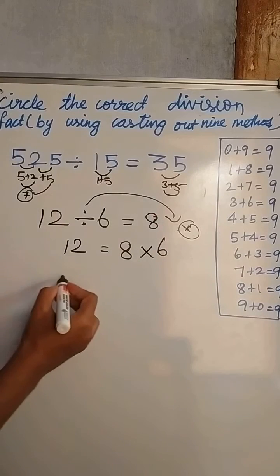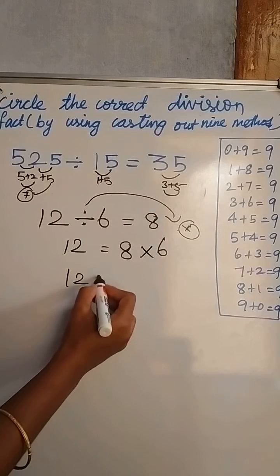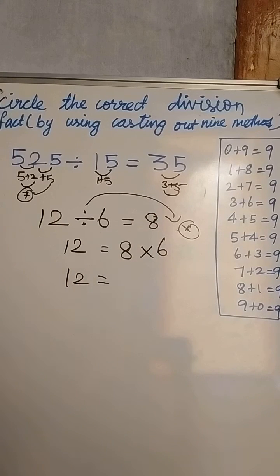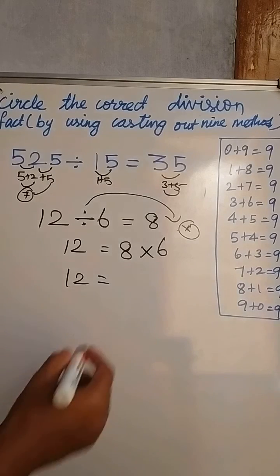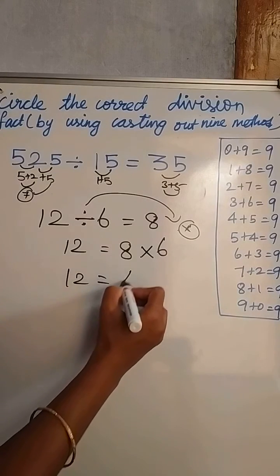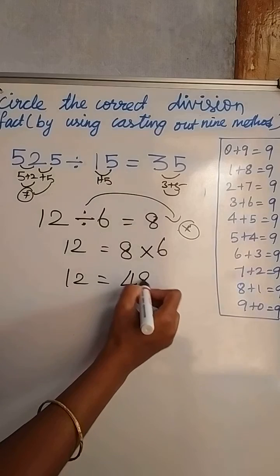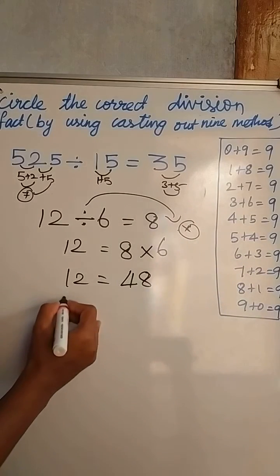Using the six times table, eight sixes are forty-eight. So we verify that 8 times 6 equals 48.